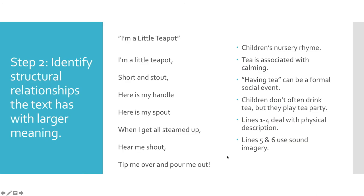The second step is to consider the structural relationships both within the text and between the text and the broader world. We know that 'I'm a Little Teapot' is a familiar and popular children's nursery rhyme, but thinking more deeply about the text's larger cultural significance leads us to understand that tea is often associated with calming and relaxing, that having tea can be a formal social event, and that children don't often drink tea — however, it is common for them to pretend to do so during tea parties. If we look more closely at the structure of the text, we see in lines one through four there's a focus on physical description, whereas in lines five and six there's an emphasis on sound imagery. All of this should be considered when constructing meaning from the text.